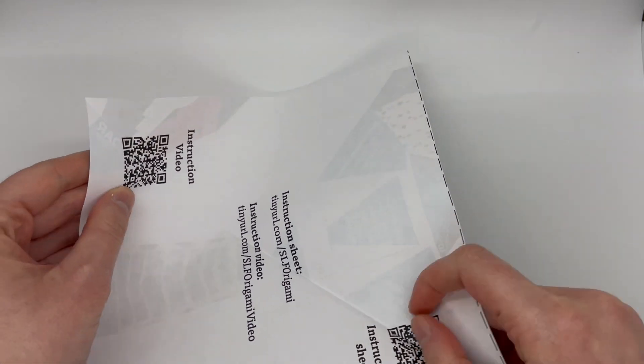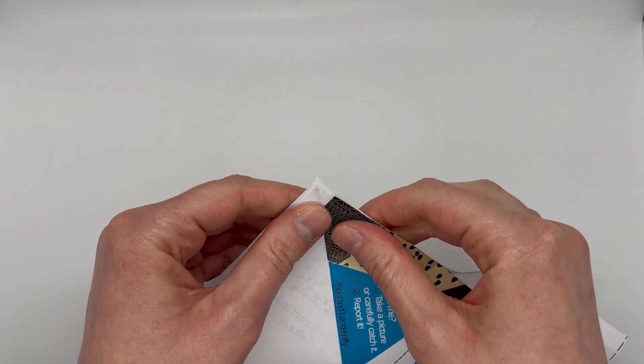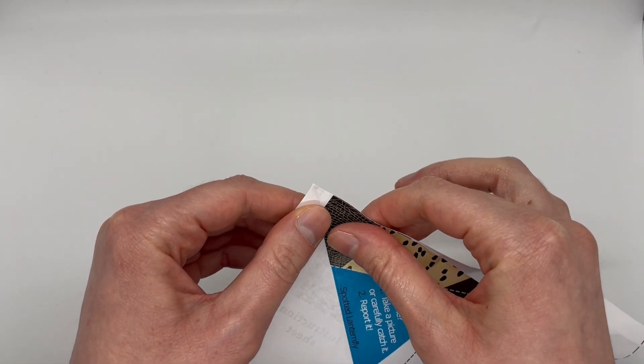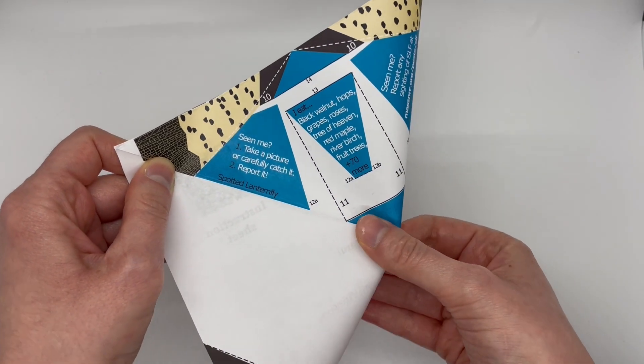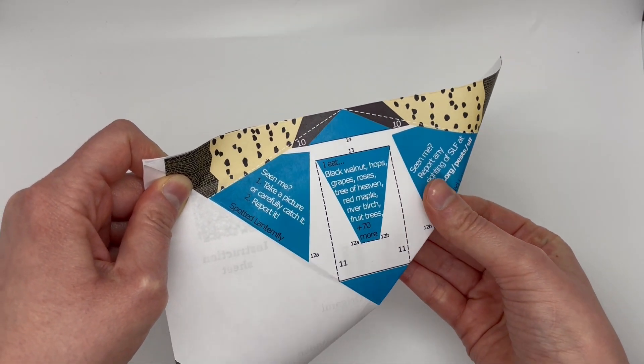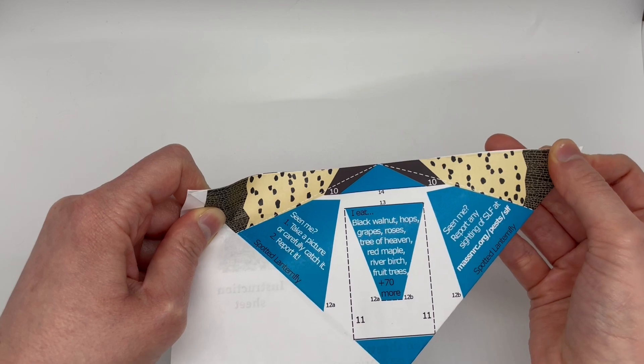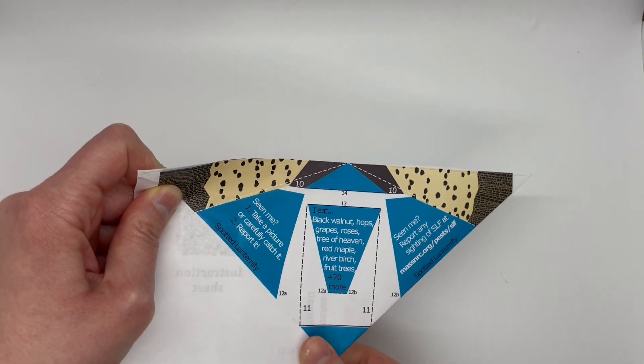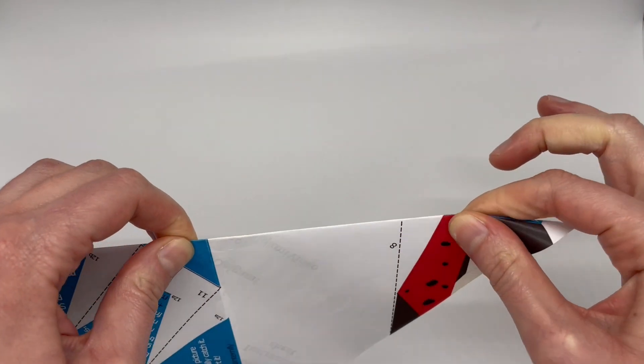Step 3. Fold the paper in half along the other diagonal. Spotted lanternfly nymphs like to eat a lot of different types of things, but we see them often on grape, bittersweet, and poison ivy early in the year.